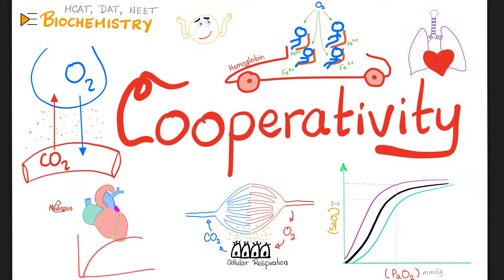Please recall that with most enzymes, they look like a hyperbola on the Michaelis-Menten plot. On the horizontal axis, we have the substrate concentration. On the vertical axis, we have the reaction velocity. However, other proteins have a sigmoidal or S-shaped plot.